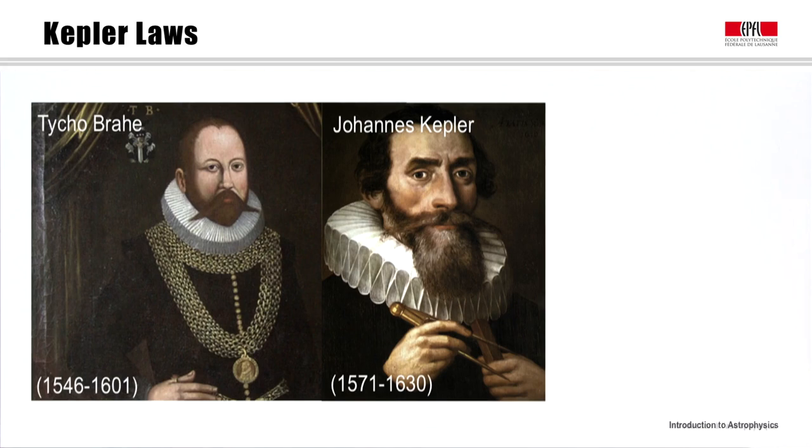In 1600, Kepler became Tycho Brahe's assistant, who asked him to compute Mars orbit. As opposed to Brahe, Kepler supported the model of a heliocentric universe, which was a source of disagreement between them and slowed down the work of Kepler. His work took him six years and was published in 1609.